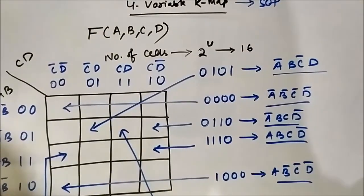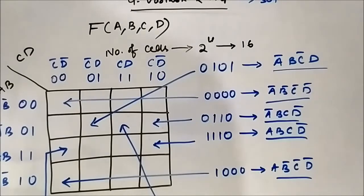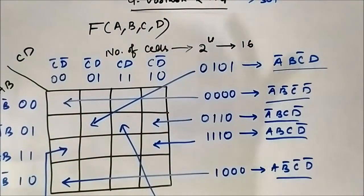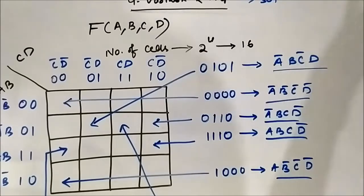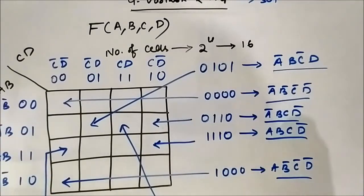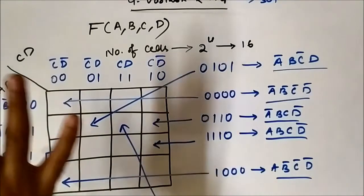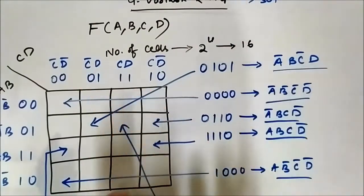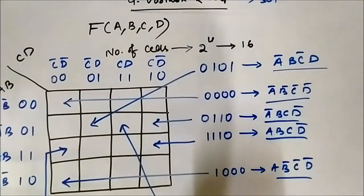So this is the 4-variable kmap. We have discussed about the 2-variable, 3-variable, and 4-variable kmap. Mainly in exams, questions will be related to these 3 kmaps — 2, 3, and 4 variable. Most questions come from 3-variable and 4-variable kmaps. There are also higher possibilities like 5-variable, 6-variable, but they are generally not asked in exams because they are very lengthy and time consuming.